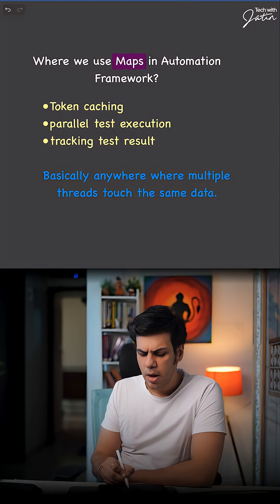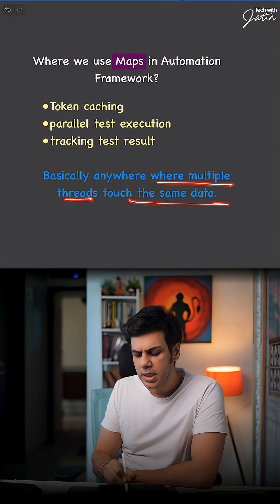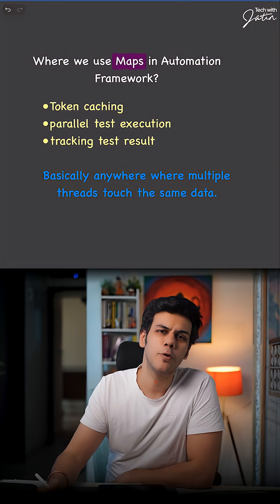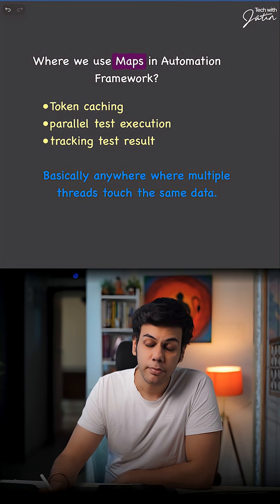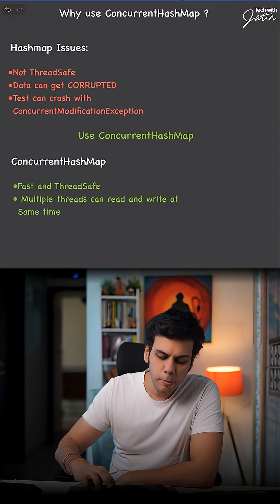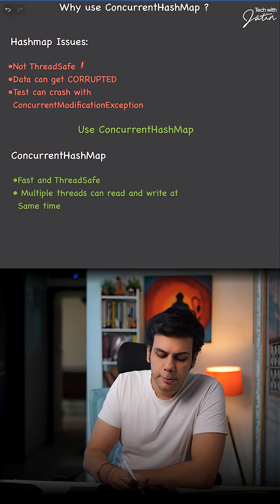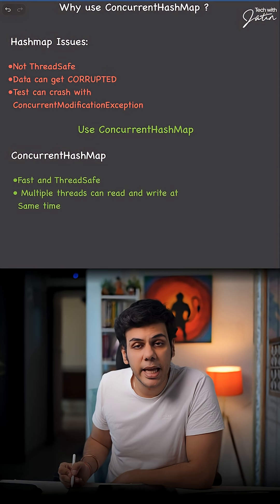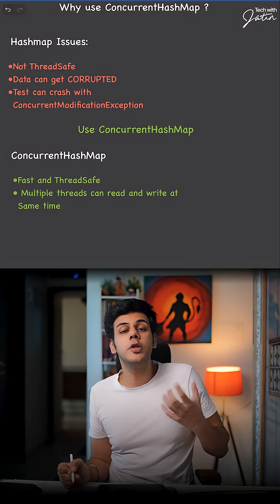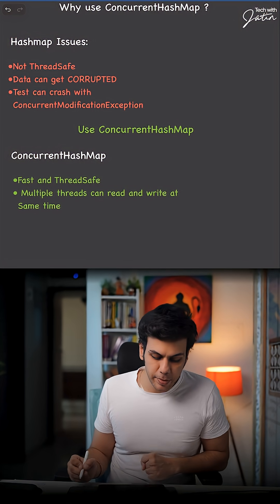Basically, anywhere where multiple threads touch the same data, maps is going to come into picture. But the problem with HashMap is that HashMap is not thread safe, meaning you cannot use it for parallel testing.